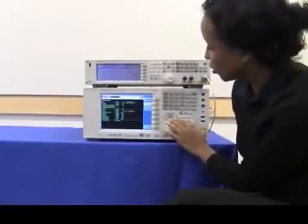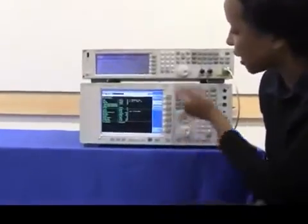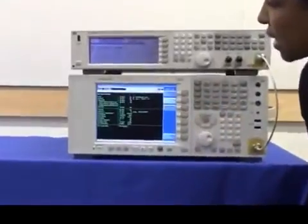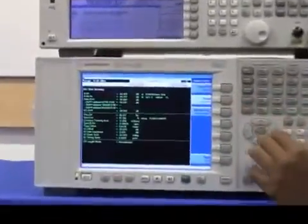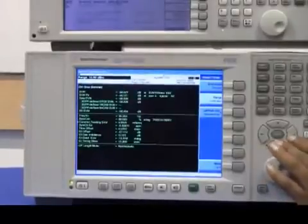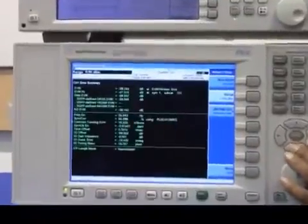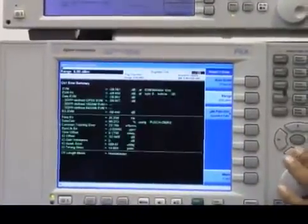I'm going to manually lower the range, and you will see, as I lower the range, the EVM performance gets better. Right now, we're measuring about minus 54, minus 55. I'm going to continue to reduce the range until I get an overload message.